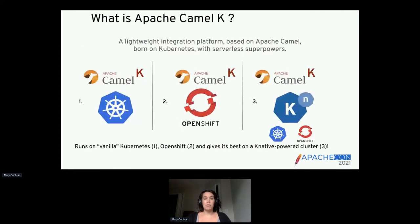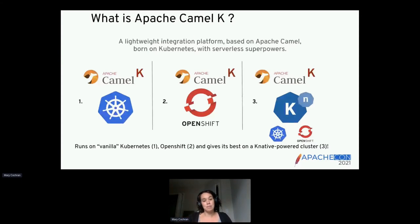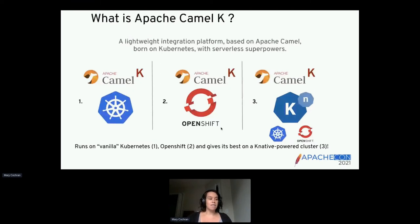When we look at how Camel K can run, we can run it on vanilla Kubernetes, on OpenShift — which I use a lot as a Red Hat employee — or with Knative, which is where we bring in that serverless aspect. Knative can be used on vanilla Kubernetes or on OpenShift. Today I'll show you how to run it on OpenShift without Knative — still Kubernetes-native but not quite serverless — and then also how to run it with Knative serving and that full serverless superpower aspect.